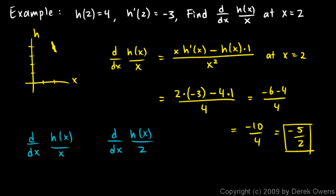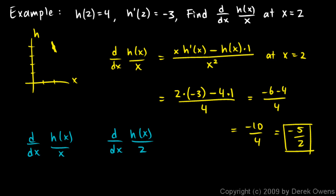And that's exactly what we did right here. We found the derivative of this function using the quotient rule, and this is a function. Then, if we want to find the value of this derivative at 2, we plug in x equals 2 into this function. But we wouldn't plug that 2 in before we took the derivative.